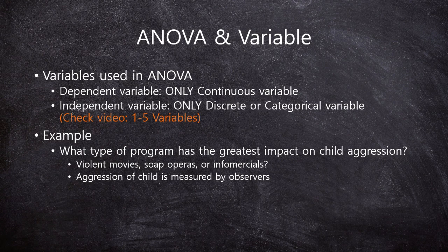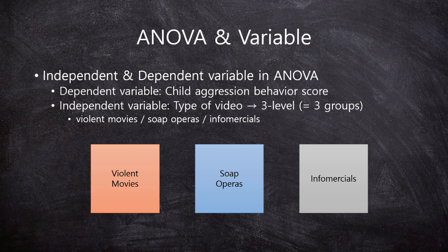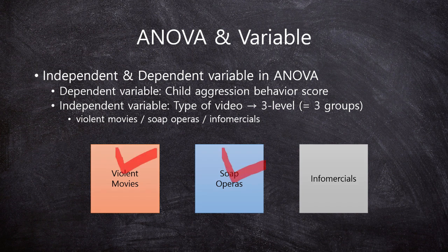In this case, what is the dependent and independent variable? The dependent variable is the child aggression behavior score, measured by trained observers — maybe psychologists. This score is a continuous variable. The independent variable is the type of video. We have three types of video, so we say we have three levels or three groups in the independent variable: violent movies, soap operas, and infomercials.